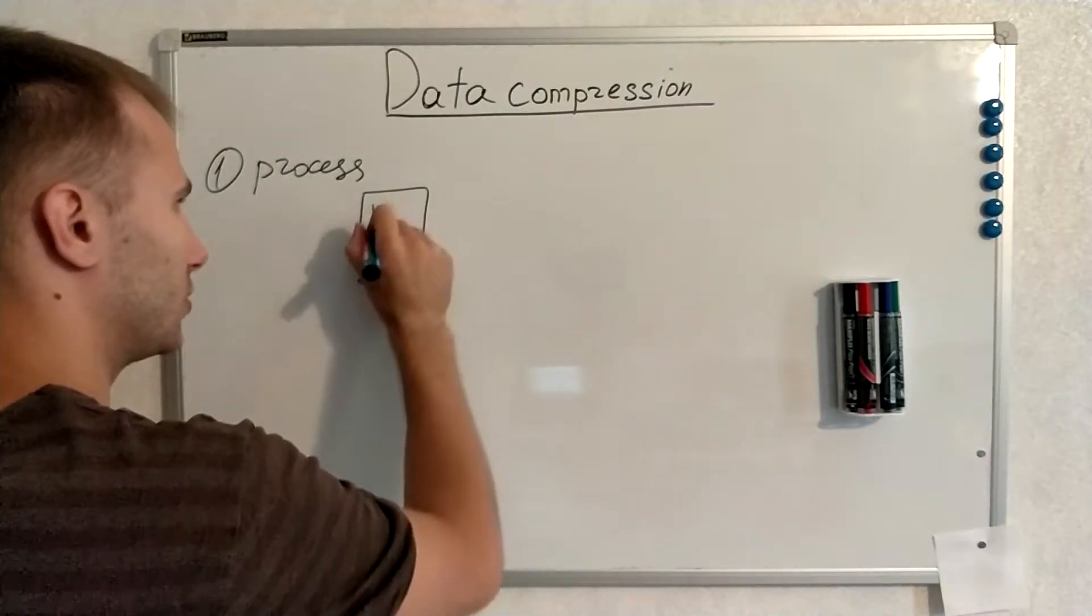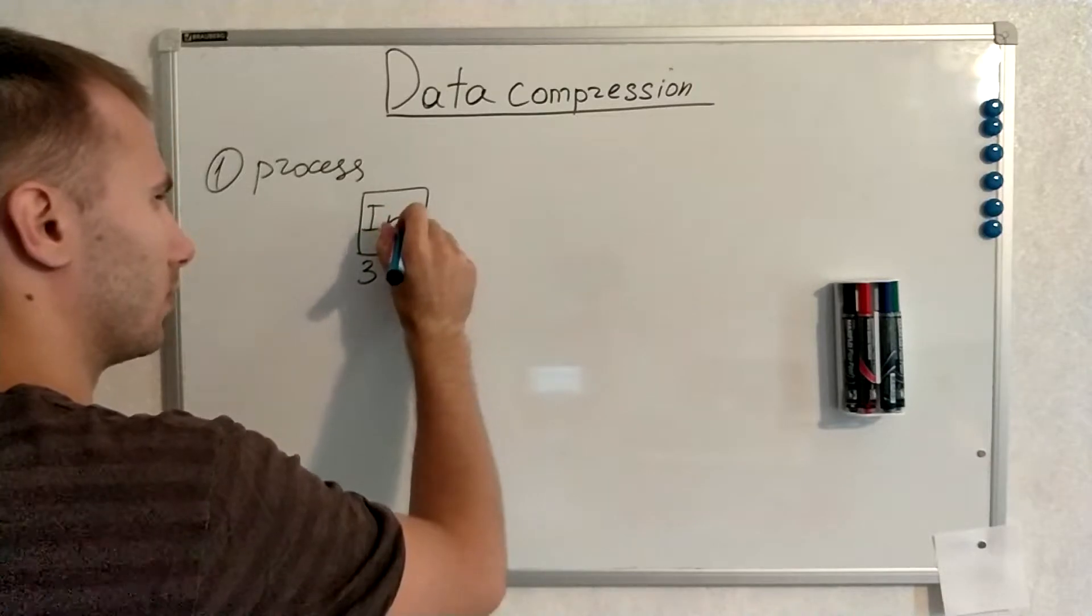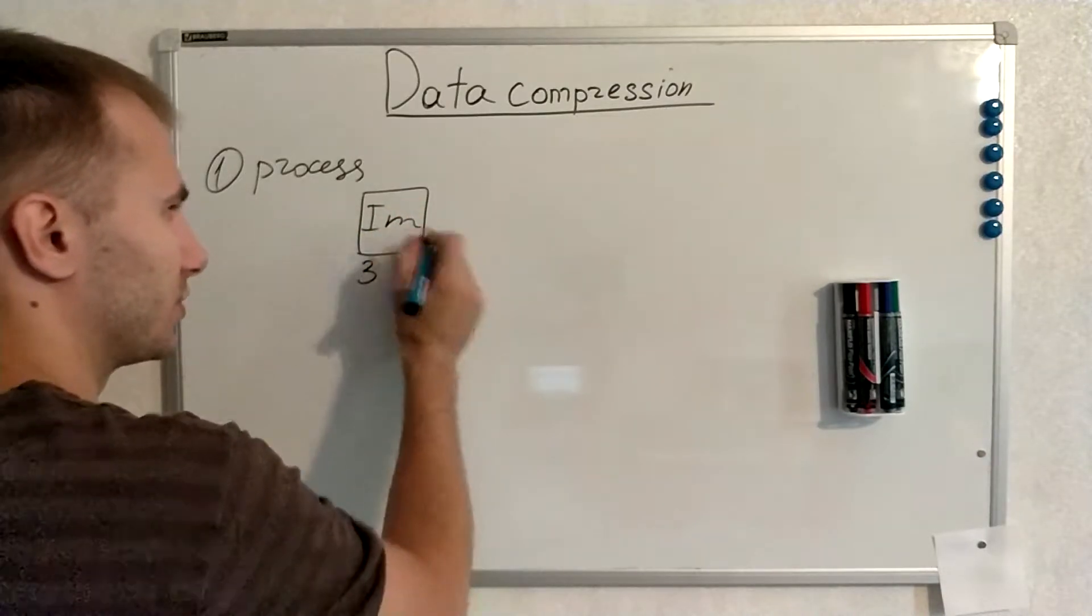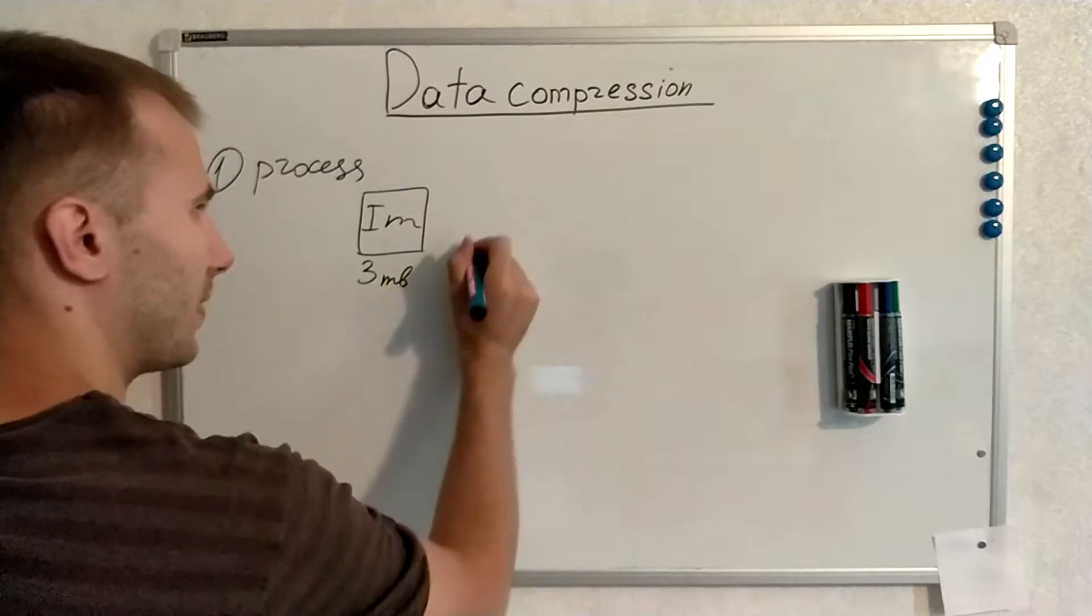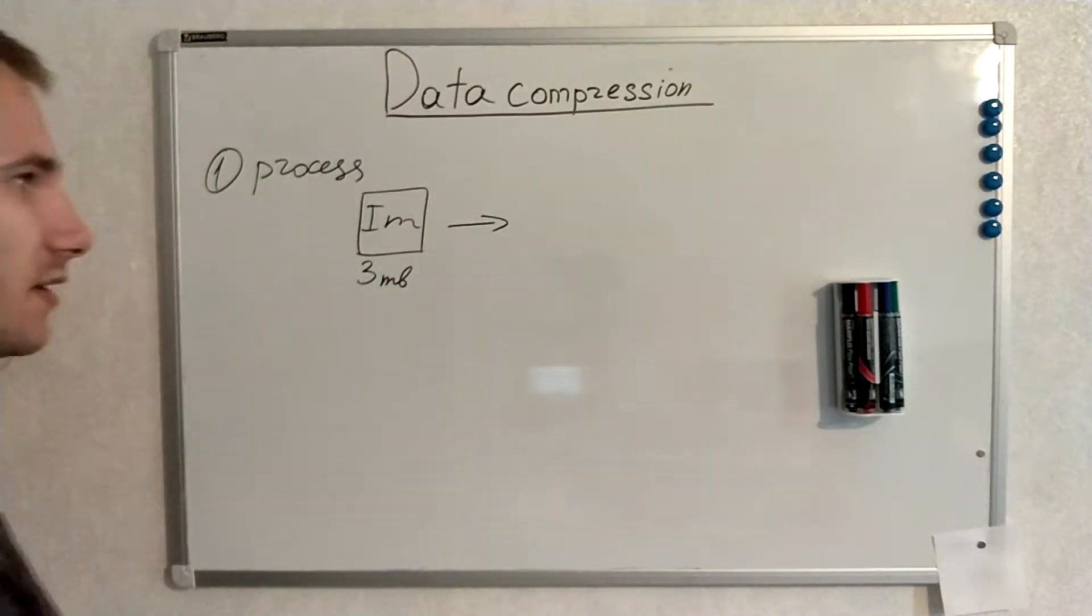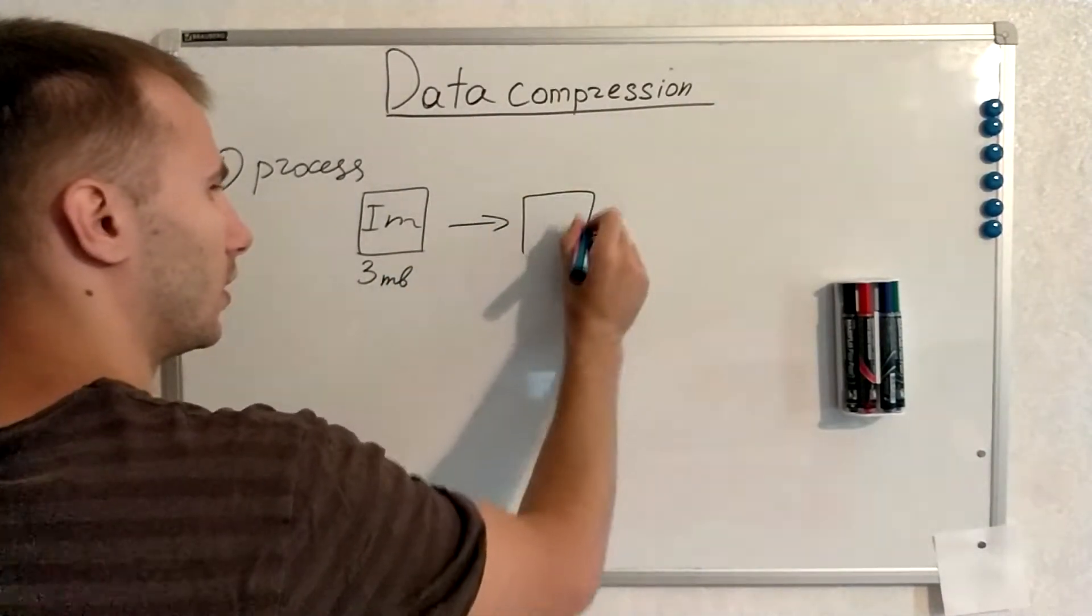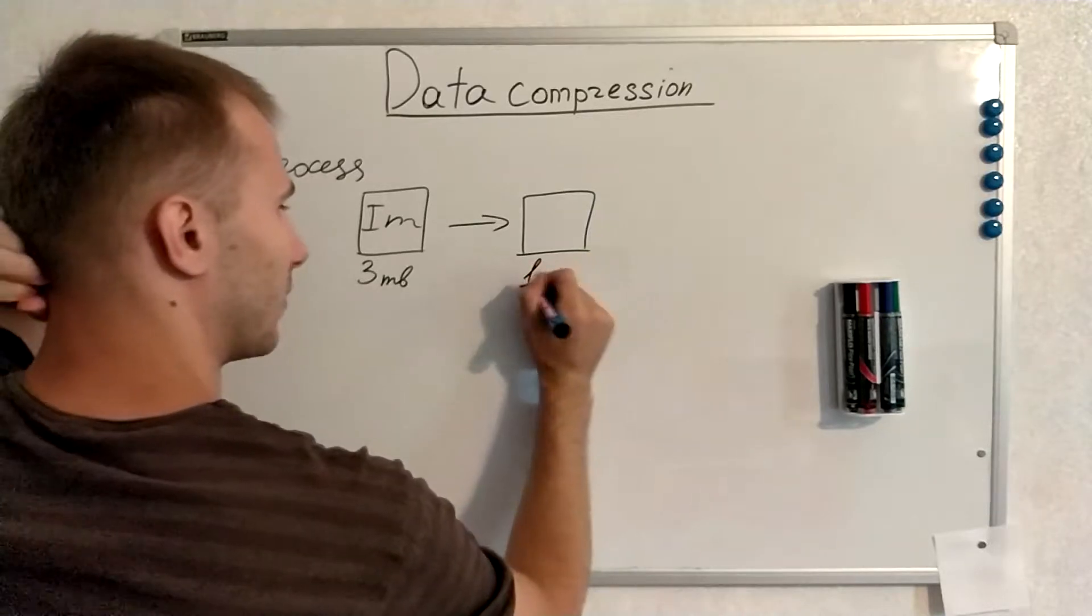For example, this is an image of two letters IM, image which weighs three megabytes. So we will use data compression to make it weigh less, let's say one megabyte.